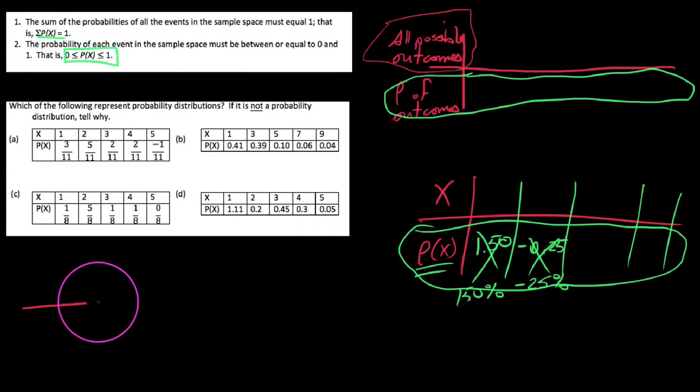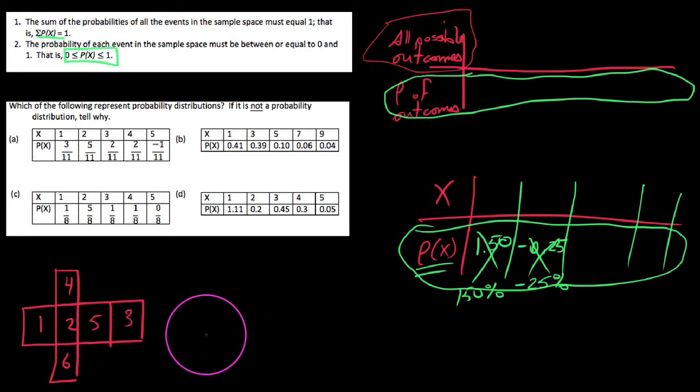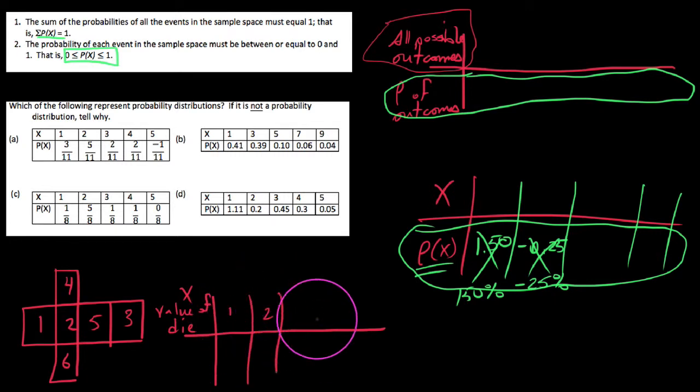So for instance, if we were to look at an experiment where we were rolling a die, of course, a die has six sides, and it doesn't have the numbers 1 through 6 on it, but we're going to kind of interpret it as having numbers 1 through 6 on it, even though it has dots on it. Put a 5 and how about a 6 here. If we were to make a probability distribution in which x represented the value of the die.